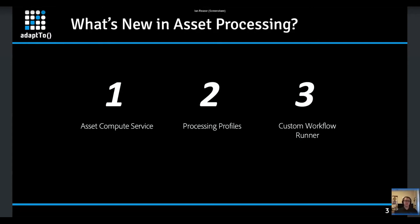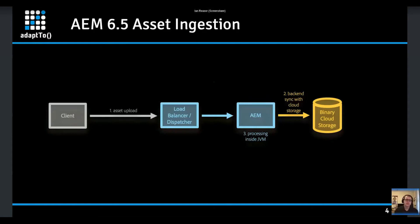We've also set up a custom workflow runner. We recognize there are still times when you'll potentially need to run custom workflows when you're done processing assets. We can't necessarily fire off those asset workflows based on simple JCR events due to asset processing being externalized, so we've set up a special OSGi service for this purpose, and you'll have configurations for that as well.